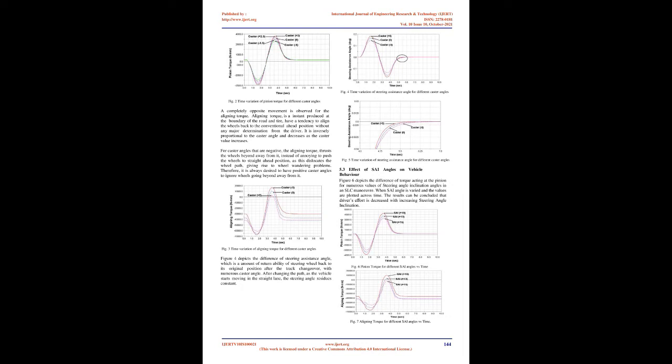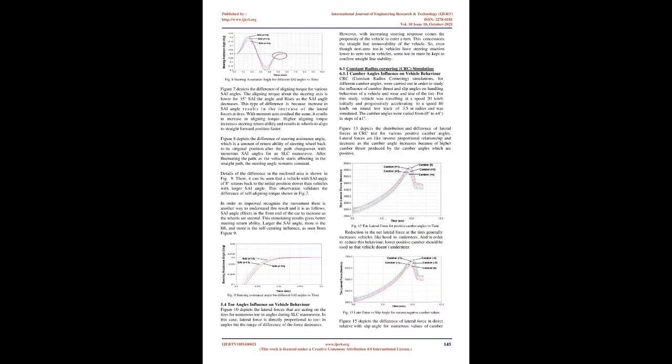Caster Angle's Influence on Vehicle Behavior. The caster angle was varied from minus 5 degrees to plus 5 degrees to observe its control on the change of steering effort. It can be concluded that the torque acting at the pinion — i.e., the amount of steering effort — is directly proportional to the caster angle and increases with the caster angle. A completely opposite movement is observed for the aligning torque, which is a moment produced at the boundary of the road and tire that tends to align the wheels back to the straight-ahead position. It is inversely proportional to the caster angle and decreases as the caster value increases. For negative caster angles, the aligning torque pushes the wheels away, giving rise to wheel wandering problems.